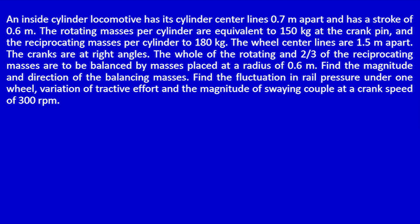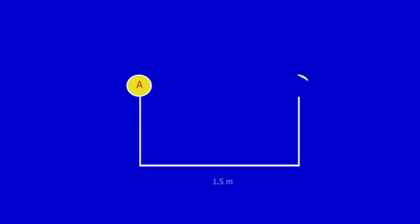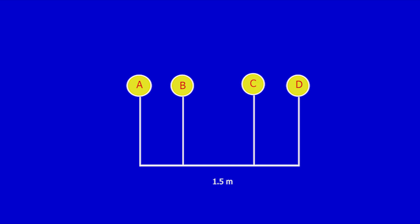Let us start with the displacement diagram. The problem statement provides the distance between two cylinders as 0.7 m and the distance between two wheels as 1.5 m. I begin by drawing a horizontal line and mark the distance between two wheels as 1.5 m. Next, I mark the distance between two cylinders as 0.7 m. Hence, the distance between wheels and cylinders is 0.4 m.